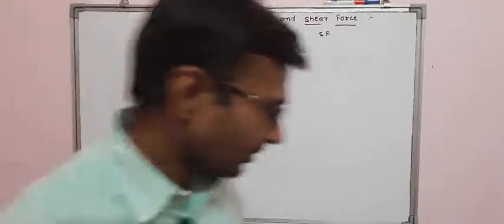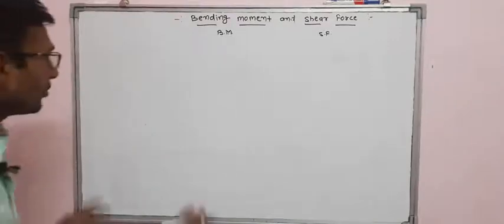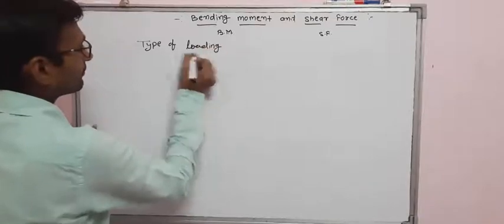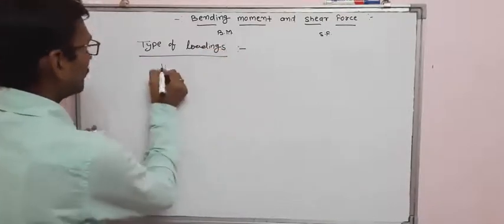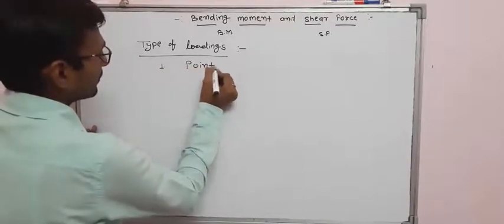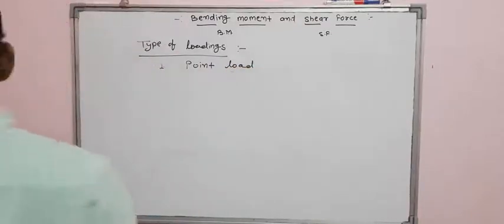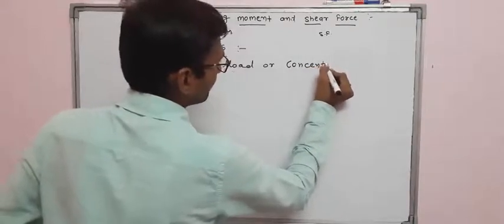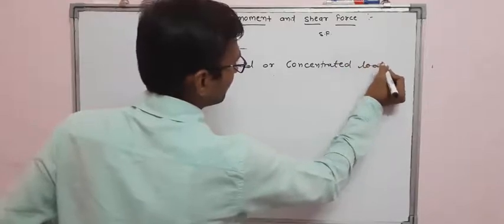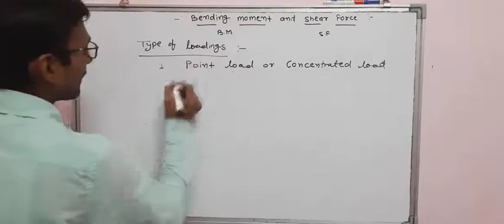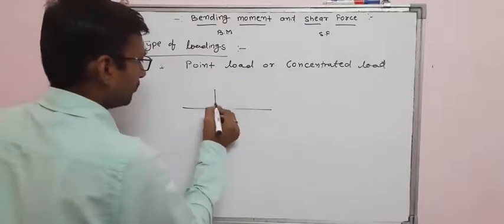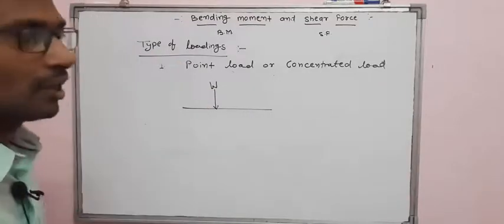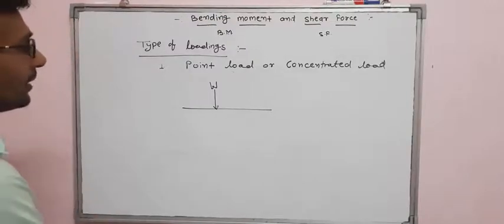After the definitions of shear force and bending moment, we will discuss types of loading. The first type is point load, also called concentrated load. A load that acts at a particular point on the beam is called a point load or concentrated load. It is generally denoted as shown in the figure.